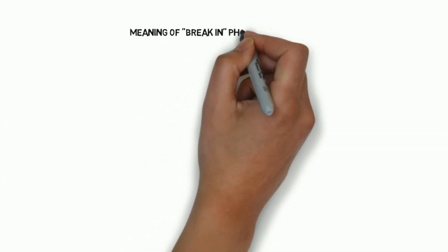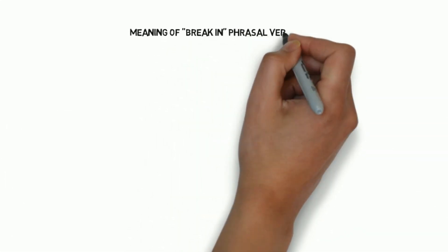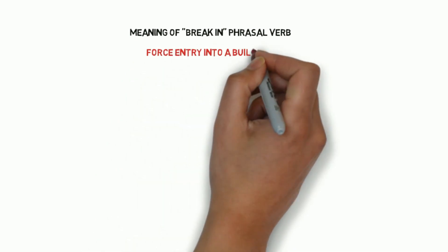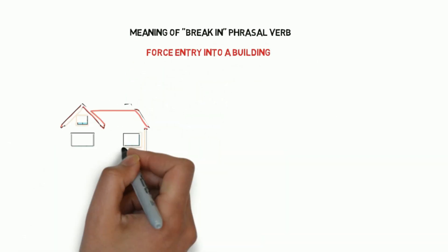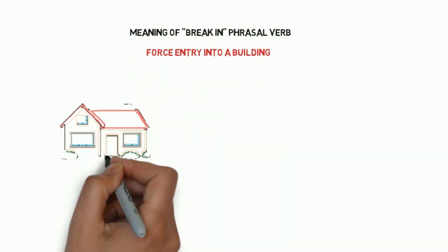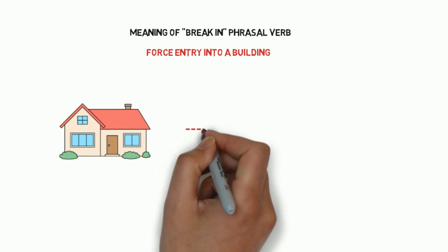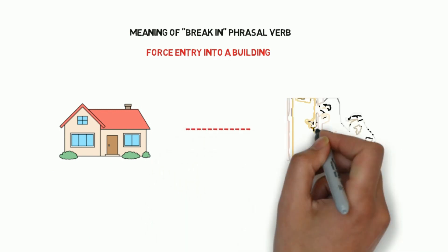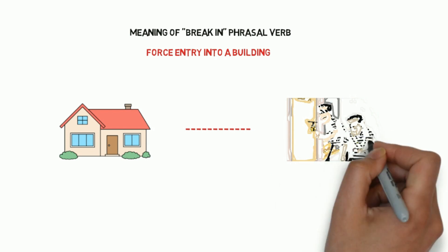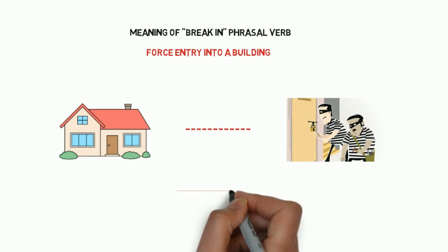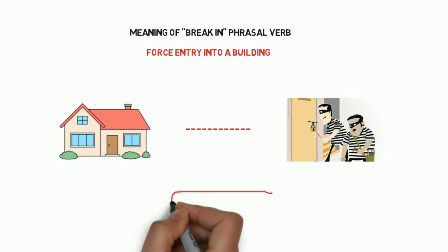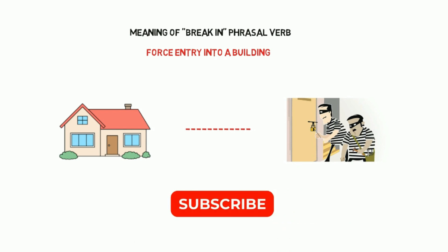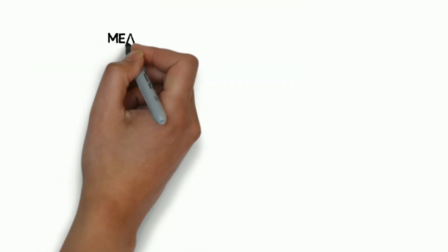The meaning of the phrasal verb 'break in' is to force entry into a building — yani ki kisi ki ghar mein, kisi building mein chup ke se ghusna. For example: he broke in my room to find out my papers — woh mere room mein chup ke se ghusa, papers dhundne ke liye.